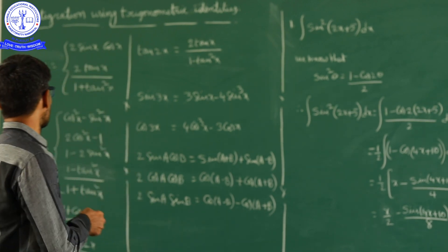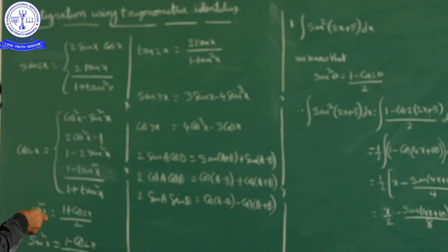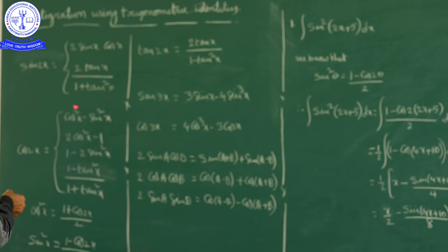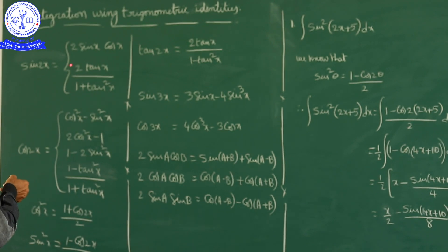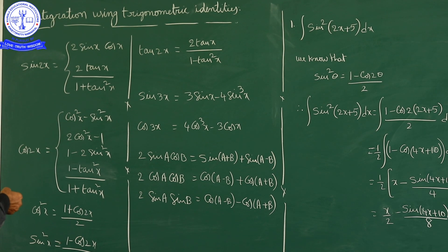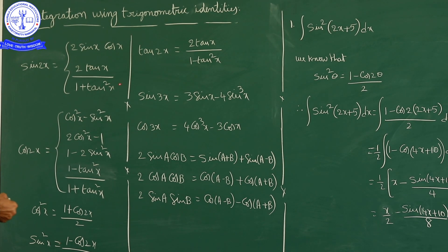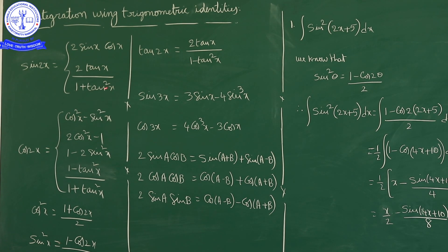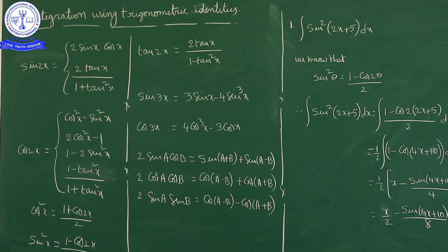First, sin 2x formula: sin 2x is equal to 2 sin x cos x. In terms of tan, it is 2 tan x upon 1 plus tan squared x. This is regarding sin 2x.